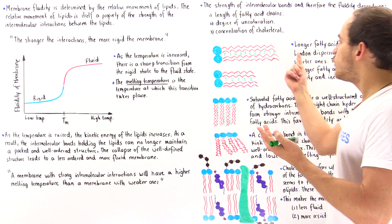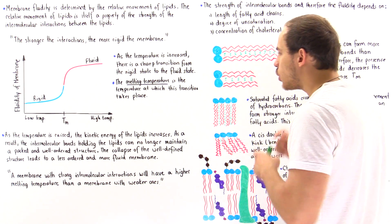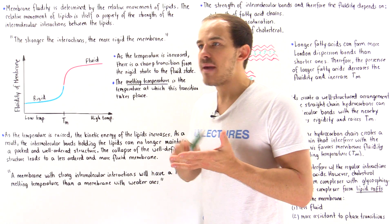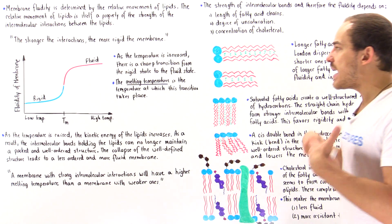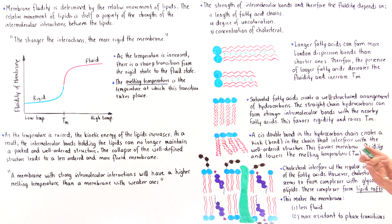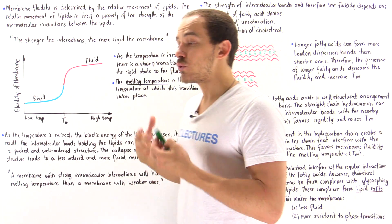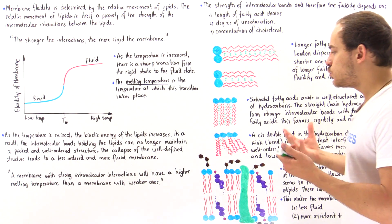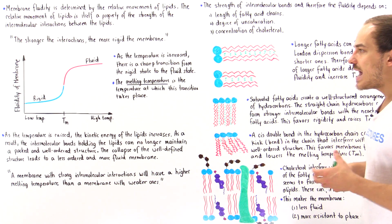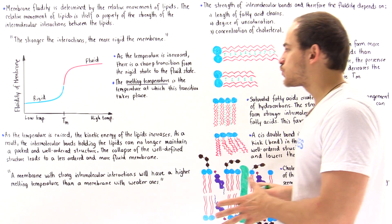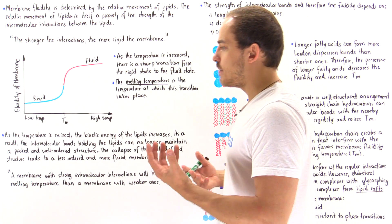Increasing the length of fatty acid chains and removing cis double bonds makes the membrane more rigid and increases its melting temperature. In bacterial cells, these two factors are typically used to control and regulate membrane rigidity or fluidity — by increasing or decreasing the number of double bonds. In animal cells, cholesterol is normally used instead.